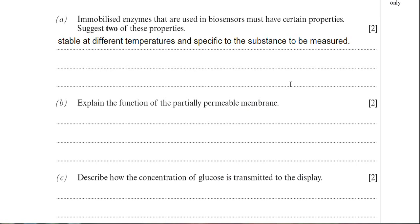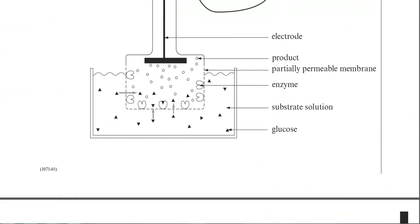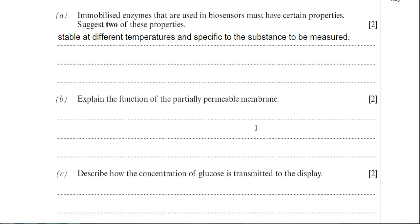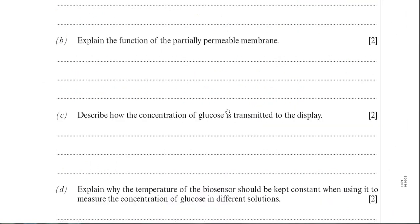The next question is asking you to explain the function of the partially permeable membrane. More often than not, this comes up all the time when we look at biosensors. So just scroll down to the diagram. You can see the partially permeable membrane there. The question is always worth two marks. Basically, it allows, in this case because we're detecting glucose, it allows glucose to pass through and enter the electrode. And it also prevents other molecules like blood cells and larger molecules from passing into the biosensor.